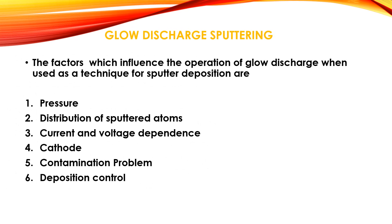The factors which influence the operation of the glow discharge when used as a technique for sputter deposition are: pressure, distribution of sputtered atoms, current and voltage dependence, cathode, contamination problem, and deposition control. The activity is to read out these six parameters which influence the operation of glow discharge, attach with your notes, and submit at the earliest.